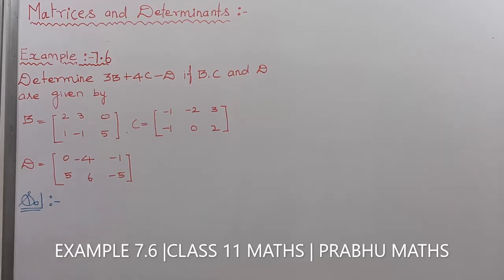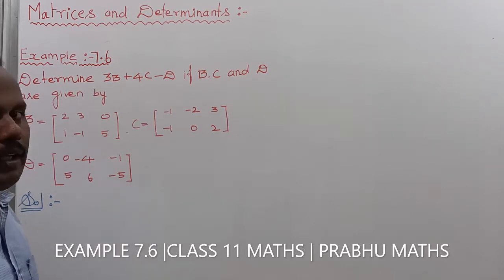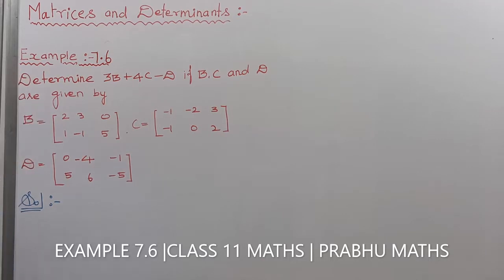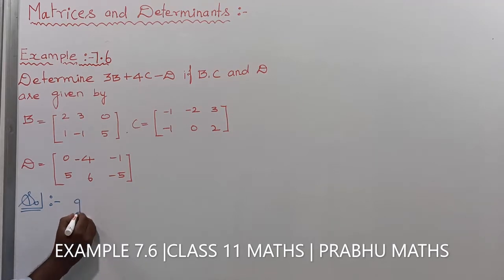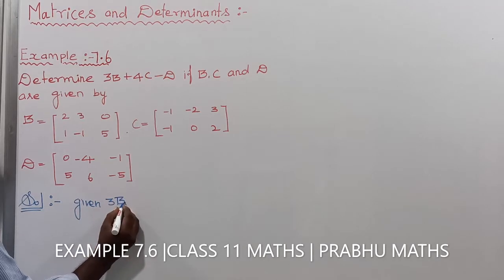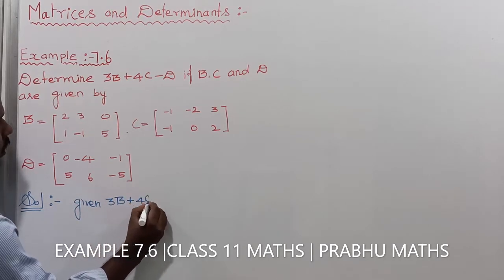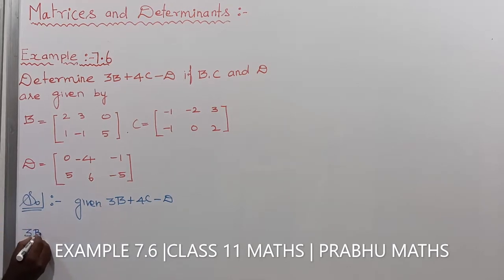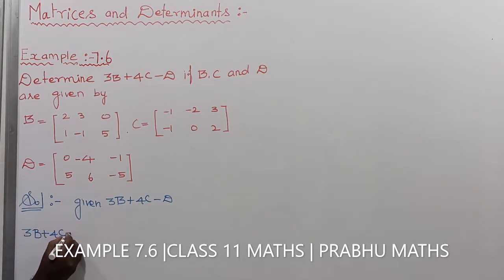Example 756: 3B plus 4C minus D. If B, C, and D are given, so the given question is 3B plus 4C minus D.